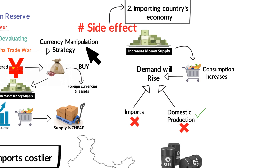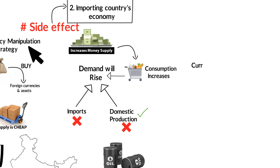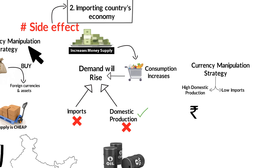India cannot use the currency manipulation strategy to devalue the rupee like China did, because Indian domestic production is not high enough to meet domestic demands. The currency manipulation strategy only works if a country is self-sufficient and does not rely on heavy imports. The Indian currency is supposed to be one of the stable currencies in the world. In 1966 and 1991, the RBI and the government of India devalued the currency, but since then it has never happened. Devaluing the rupee would require artificially increasing the money supply, which would increase spending and demand, and ultimately ruin the economy.